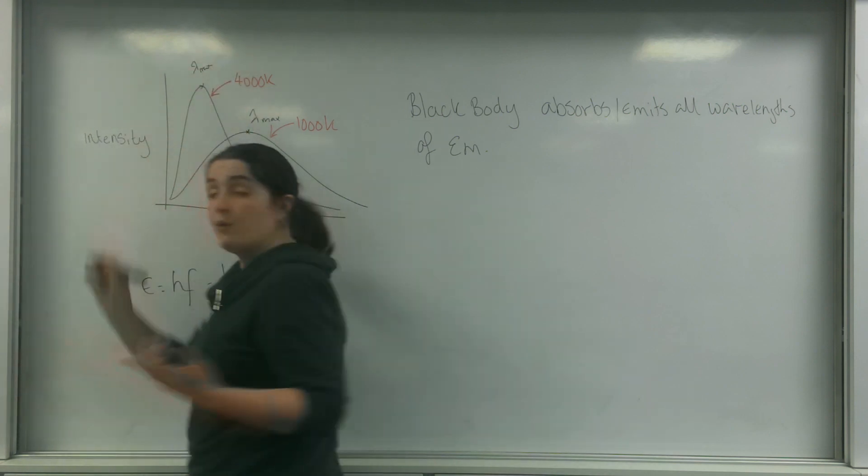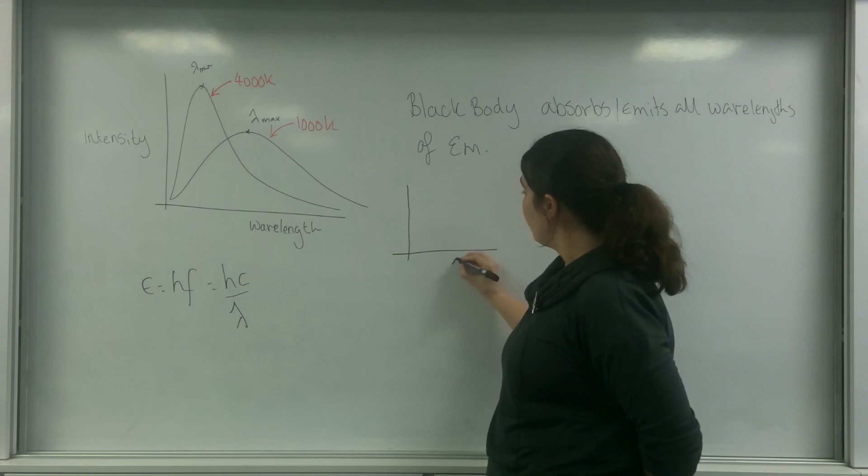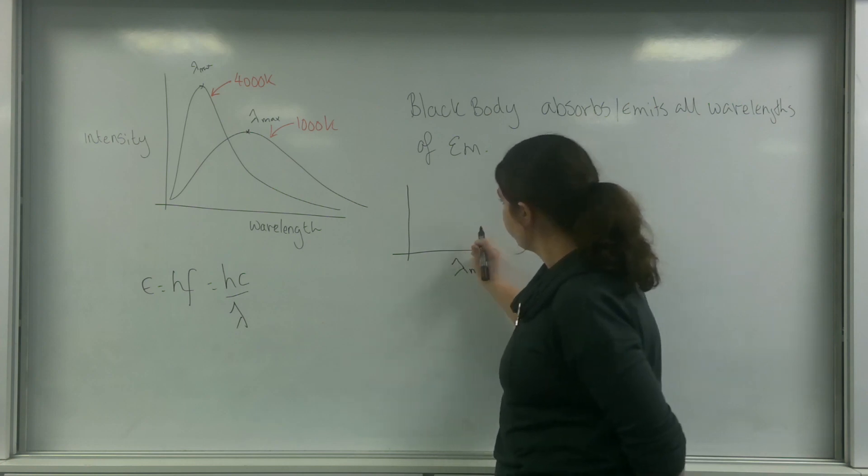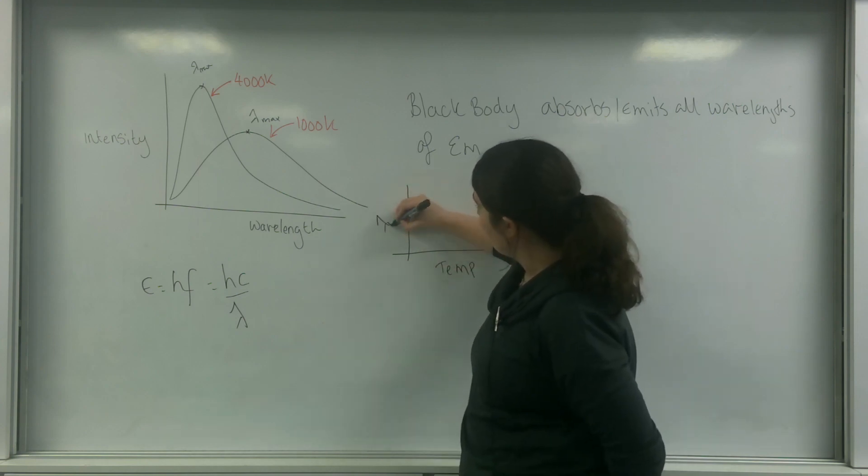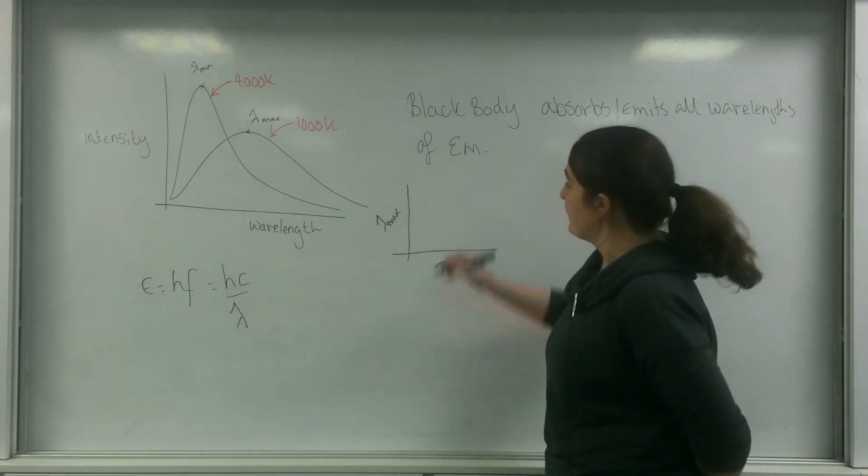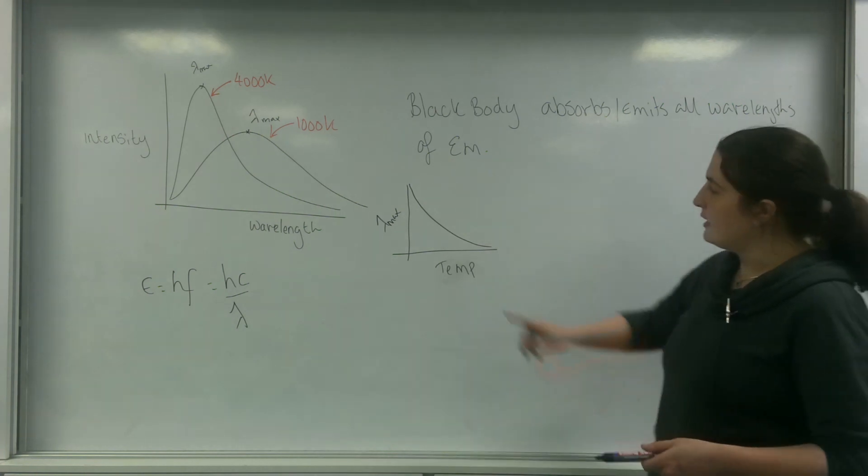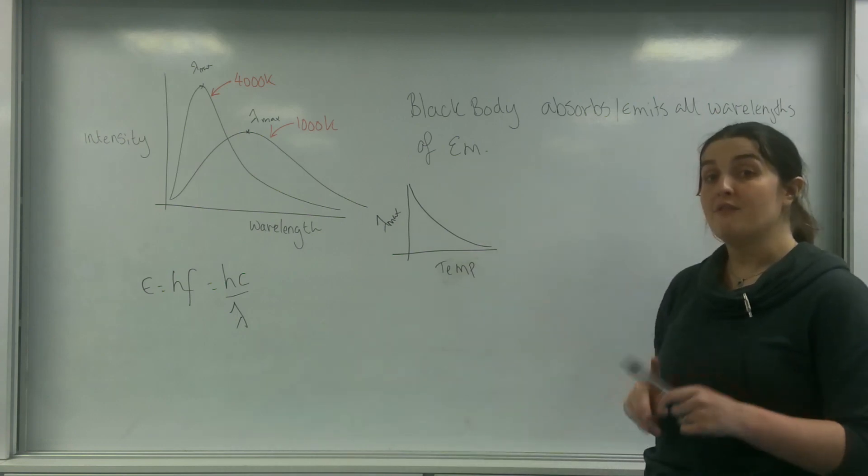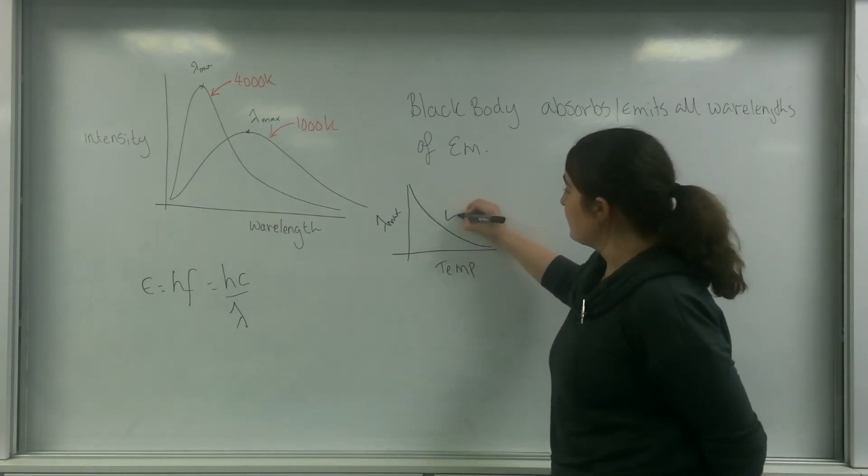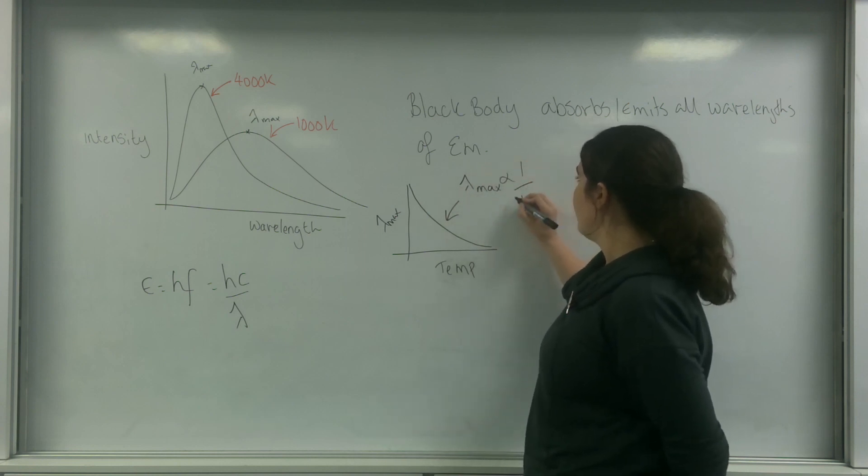So initially, a graph was plotted of temperature versus lambda max. And the graph that was produced was this. So I had a proportional relationship that wasn't linear, wasn't directly proportional. It's actually inversely proportional. This is saying that lambda max is proportional to 1 over the temperature.